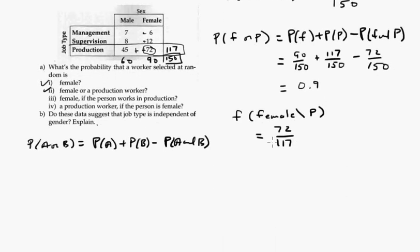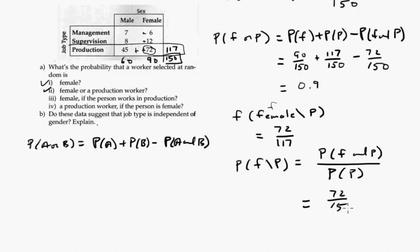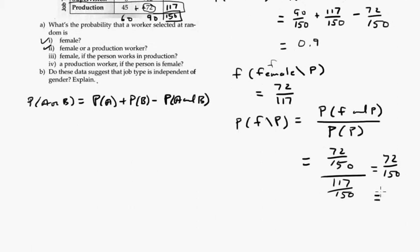Now, if we follow the formula, I'm just going to call this F, then that would be the probability of both female and production worker, divided by the probability that they're a production worker. So female and production, that's 72 out of 150, divided by the probability of a production worker, 117 out of 150. And so with a little bit of algebra, that's going to be 72 out of 117. I think it's going to be 0.615.